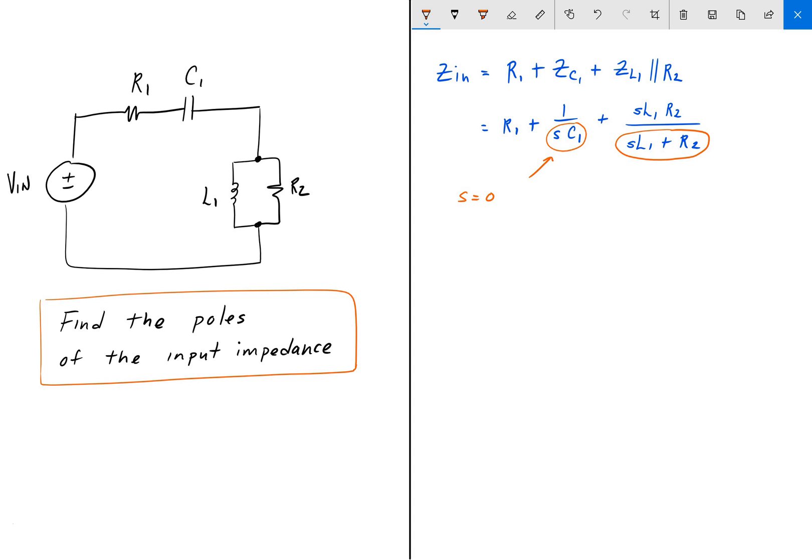And it also happens when Sl1 plus R2 is equal to zero. And that corresponds to S being equal to negative R2 over L1. So here we just solve for S. And so our two poles are S equals zero and S equals minus R2 over L1.